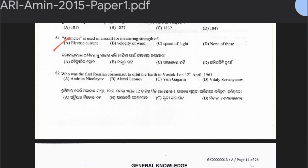Question number 52: Who was the first Russian cosmonaut to orbit the Earth in Vostok 1 on 12 April 1961? Options: Andrian Nikolaev, Aleksei Leonov, Yuri Gagarin, or Vitaly Sevastyanov. The answer is option C — Yuri Gagarin.